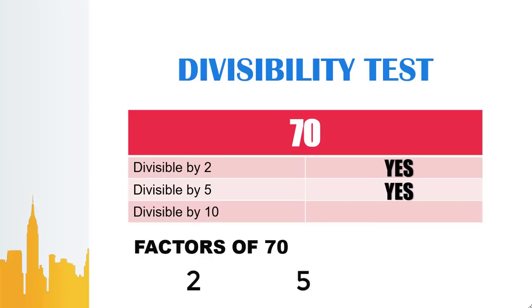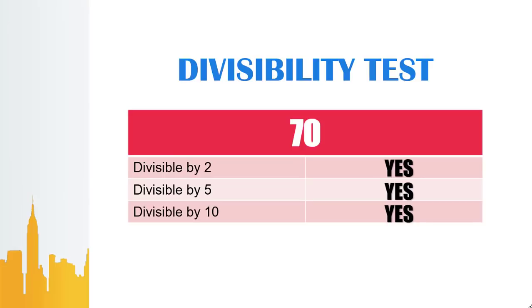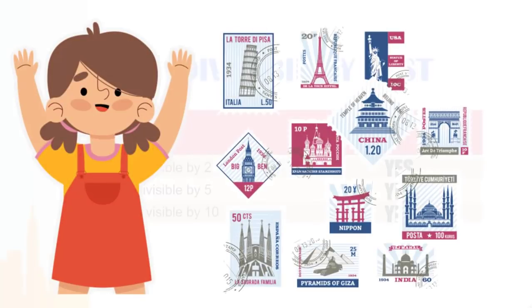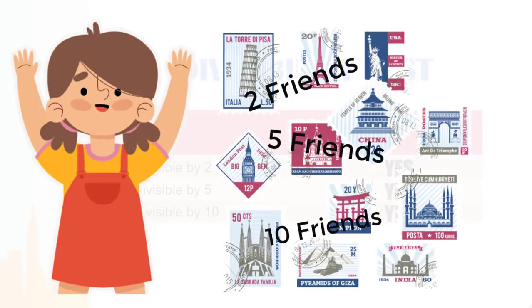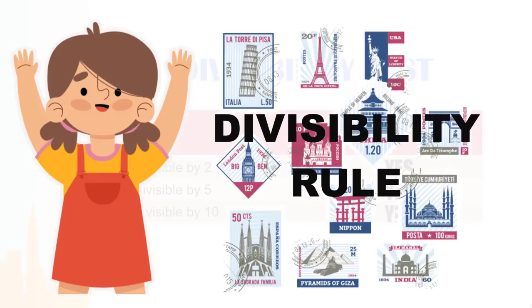And lastly, is 70 divisible by 10? Yes, since the 1's place in 70 is 0. Since 70 is divisible by 10, that makes 10 a factor of 70. Therefore, the collected stamps can be divided equally to 2 friends, 5 friends, or 10. By remembering the divisibility rule, we can know if numbers are divisible by 2, 5, or 10 even without dividing the numbers to the test value.